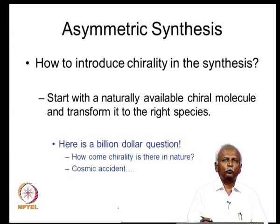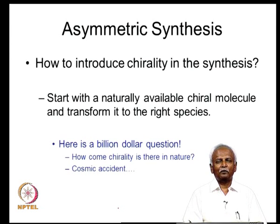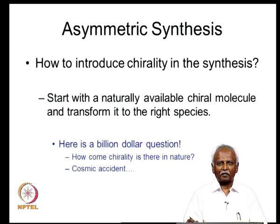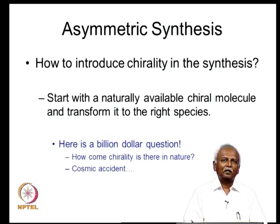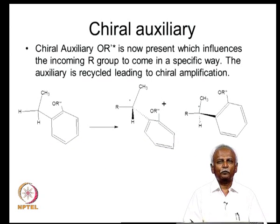Obviously the best way is to introduce chirality in the synthesis. Very often the answer turns out to be a logically circular form of reasoning: how do you introduce chirality in the molecule you want to synthesize? The answer is — you start with a chiral molecule which is already available. You have to have a chiral molecule in order to make a chiral molecule. The billion-dollar question is how did chirality come into nature and the universe. The answer sometimes given in textbooks is that it is a cosmic accident — a philosophical question we will leave here as we proceed to synthesis of chiral molecules.